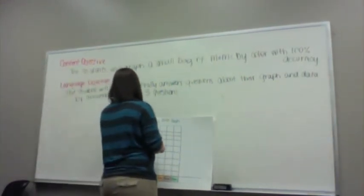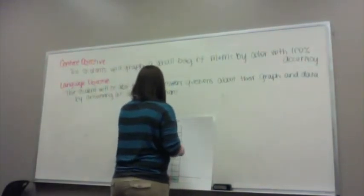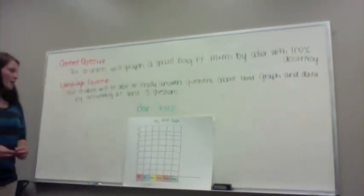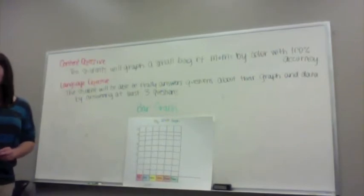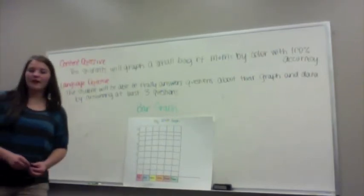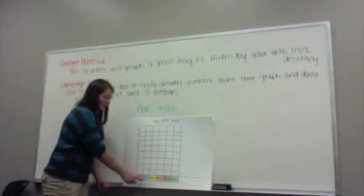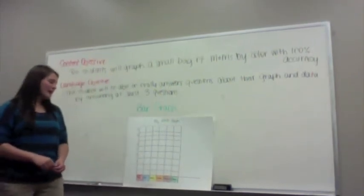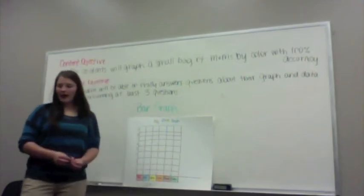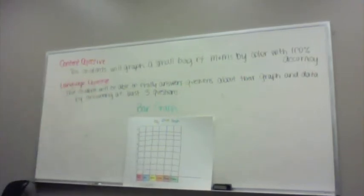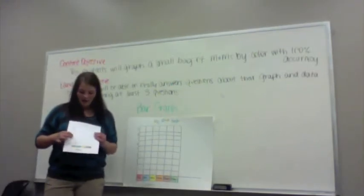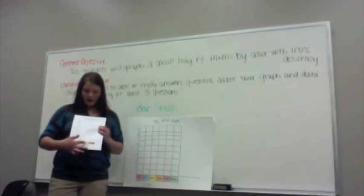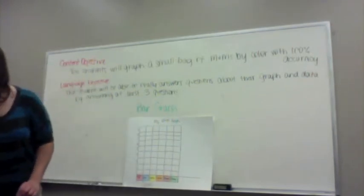This is called a bar graph. Together we are going to make our first bar graph. You will all get a bag of M&Ms. A bag of M&Ms has six different colors: red, blue, yellow, orange, brown, and green. I have created these graphs for you, and you will place each M&M in a box. If it's a red, it will go above the red box; if it's a yellow, it will go above the yellow, and so on. So we'll start together.